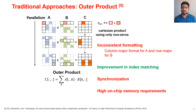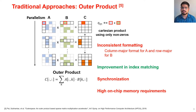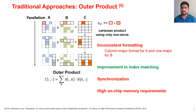The outer product approach again has inconsistent formatting because A needs to be stored in column-major order and B in row-major order. However, it avoids the inefficient index matching present in the inner product approach. It does require synchronization because different parallel steps produce the entire partial sum matrix and there can be read-after-write dependencies. It also has high on-chip memory requirements because every parallel step needs to store the entire partial sum matrix in on-chip memory.